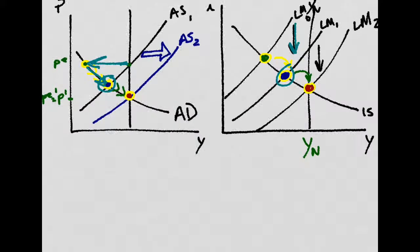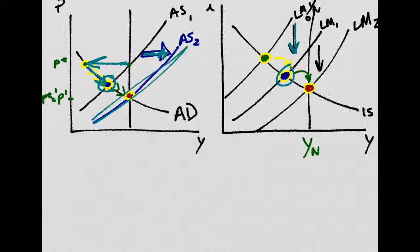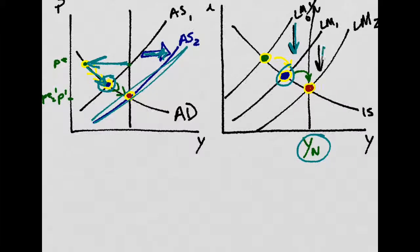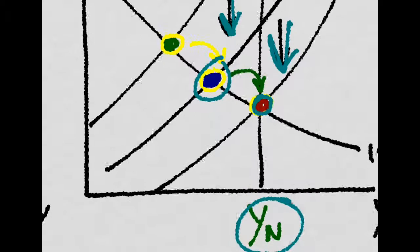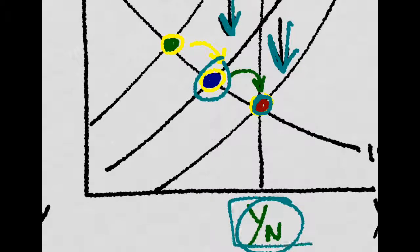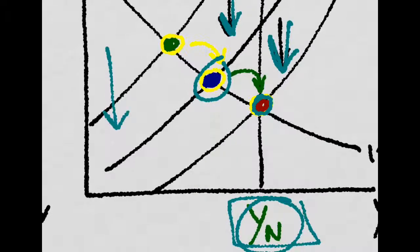But people were wrong in their expectations. They lowered their expectations, they lowered the wage, and then firms increased their aggregate supply because costs are lower. And that leads us to the old natural rate of output because the decrease in prices will shift down the LM,